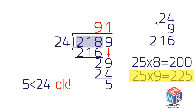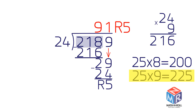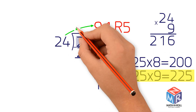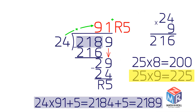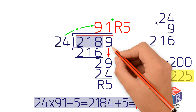You have no more numbers to bring down. 5 is the remainder. You are finished, and the answer is 91, with the remainder of 5. Let's check the answer: 24 times 91 plus 5 equals 2,189. It's correct.